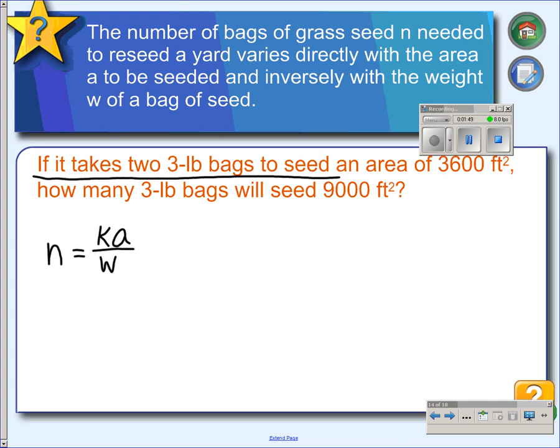We take this statement to figure out what K is. If it takes two 3-pound bags, so N is 2, and the weight is 3 pounds, to seed an area of 3,600 square feet, so the area is 3,600. We're finding K first. 3 goes into 3,600 1,200 times, and then we divide both sides by 1,200, and we get K equals 2 over 1,200, which is the same as 1 over 600.